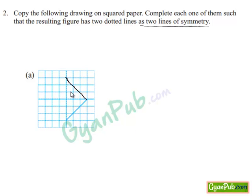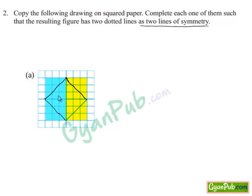Reflecting the lower half to the upper side, the object below the horizontal line is the same as above it. Now we have half of the object on the vertical side, so let's reflect this total object to the other side of the vertical line. We get a closed figure which is both horizontally and vertically symmetrical. Hence this is the closed object through which the figure has two dotted lines as two lines of symmetry.